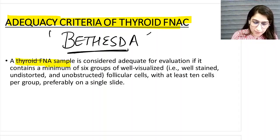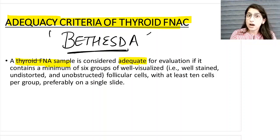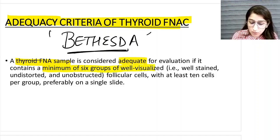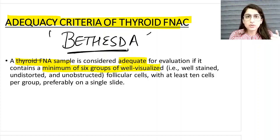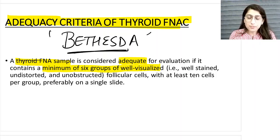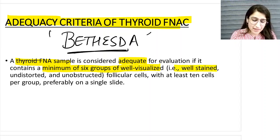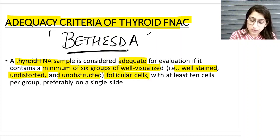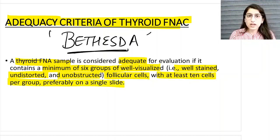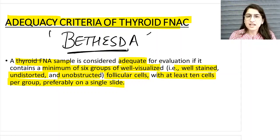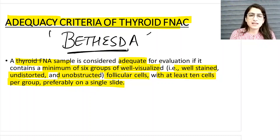A thyroid FNAC sample is considered adequate if you are able to see a minimum of six groups of well-visualized follicular cells - meaning the staining should be good, you can appreciate all the cells, there should be no artifacts or obscuring blood. Within each group there should be at least 10 cells. So minimum: six well-visualized follicular groups, with at least 10 cells per group.